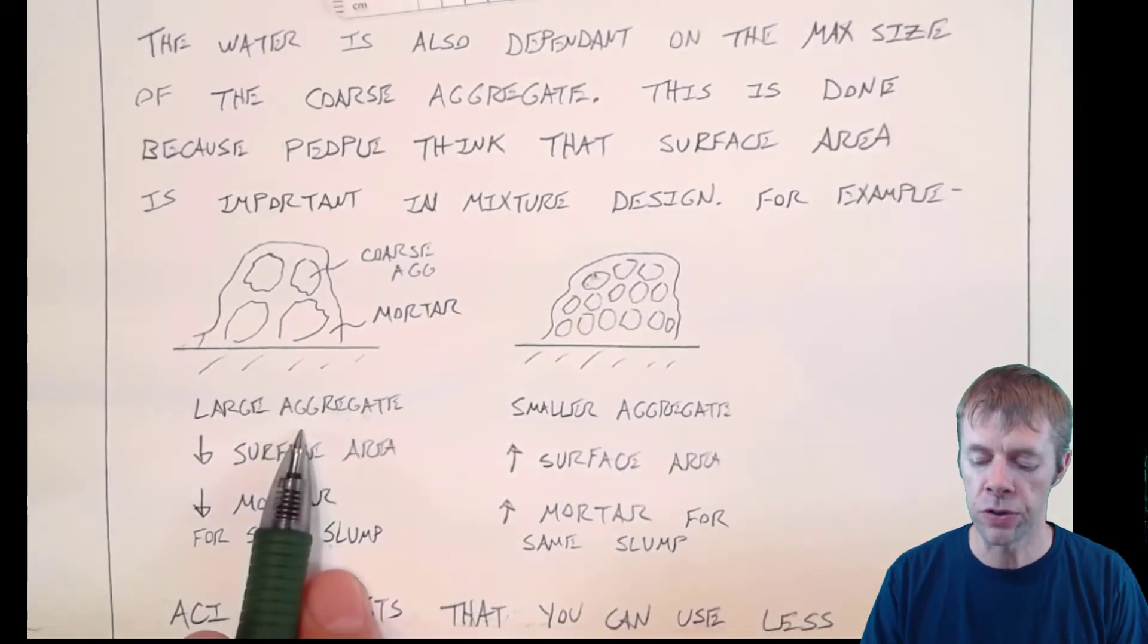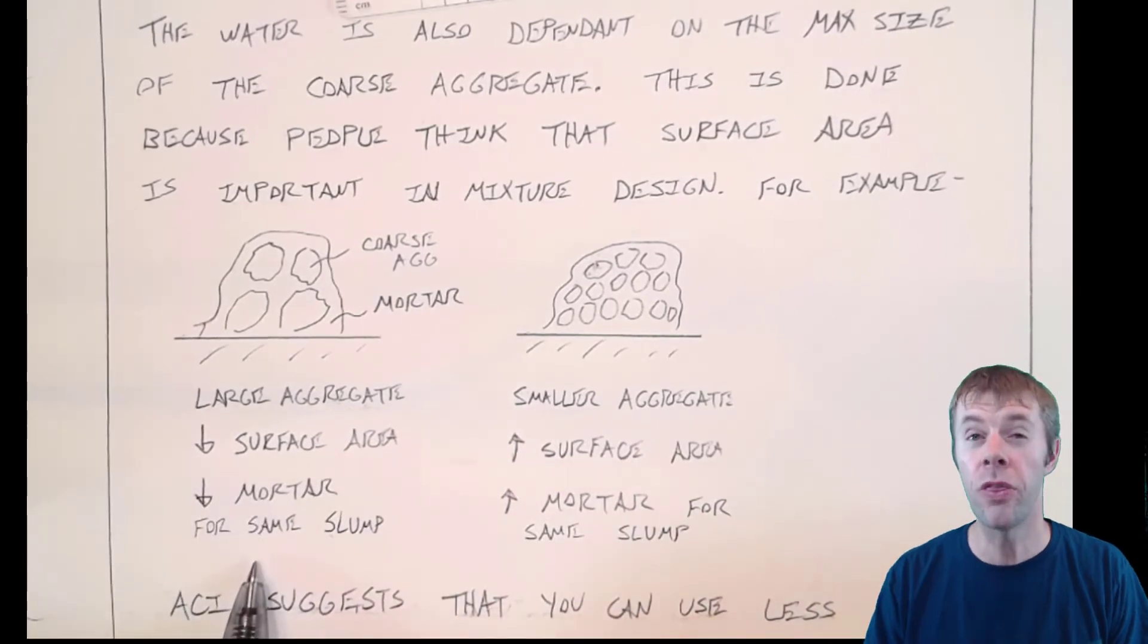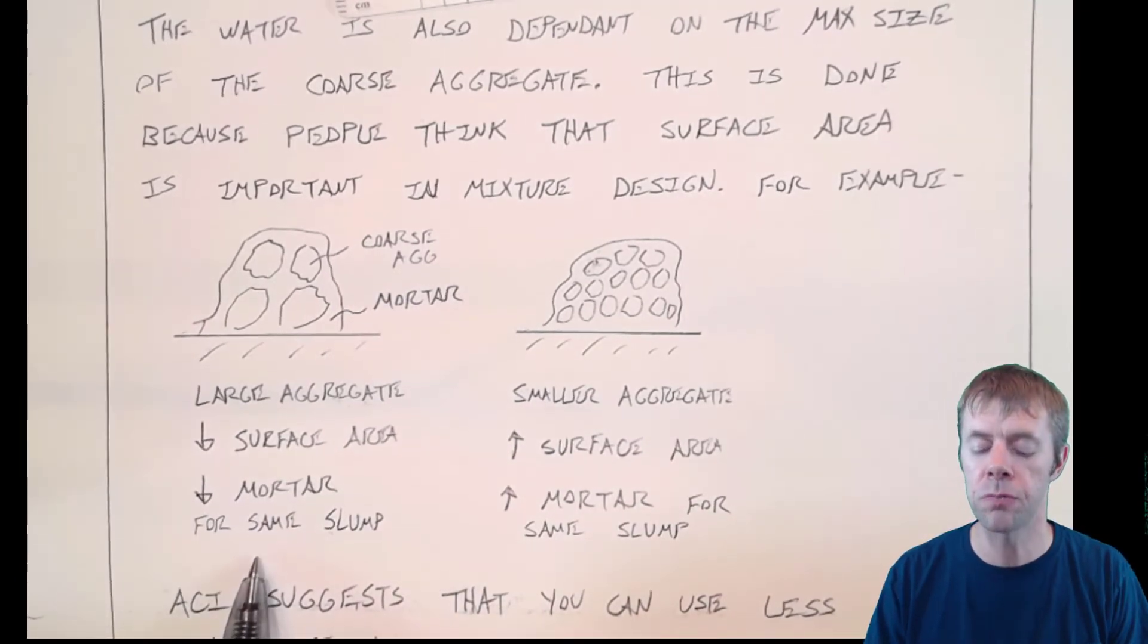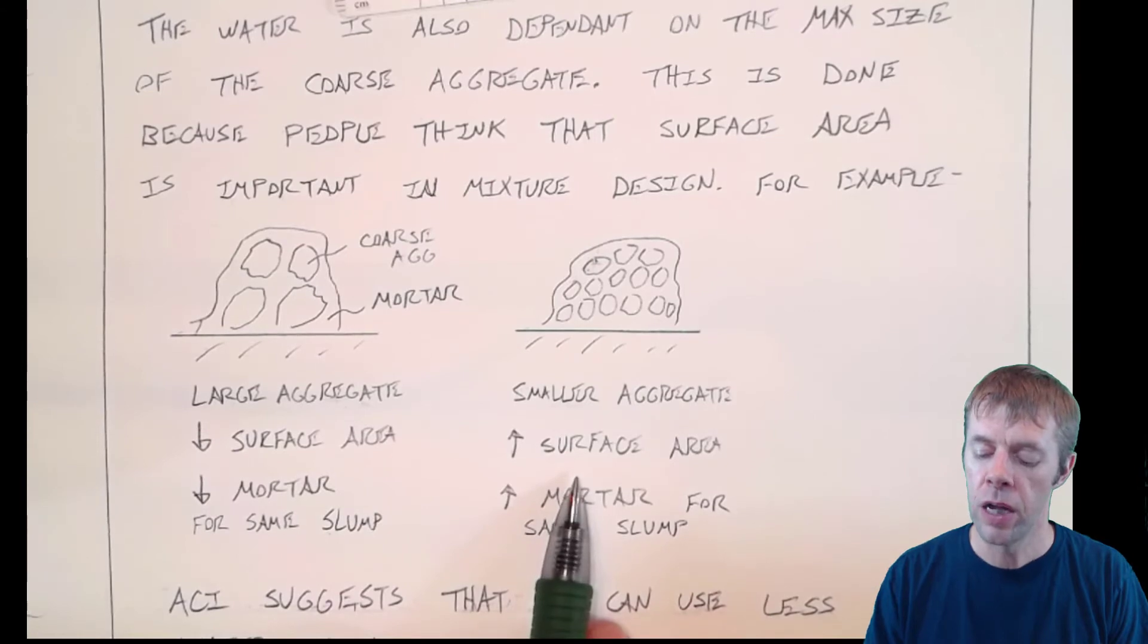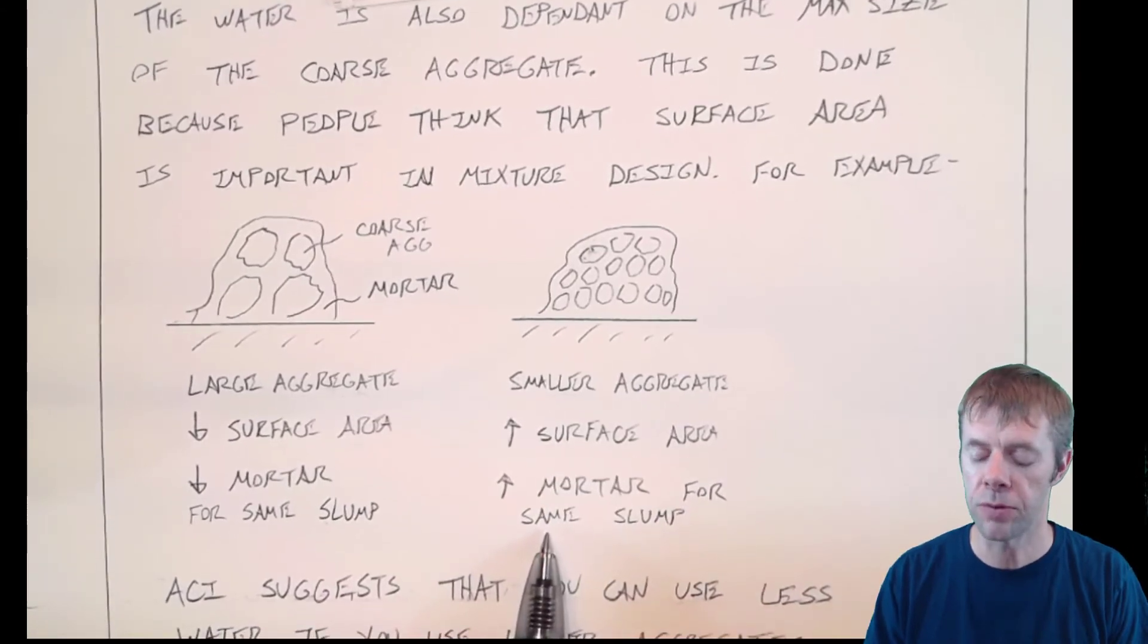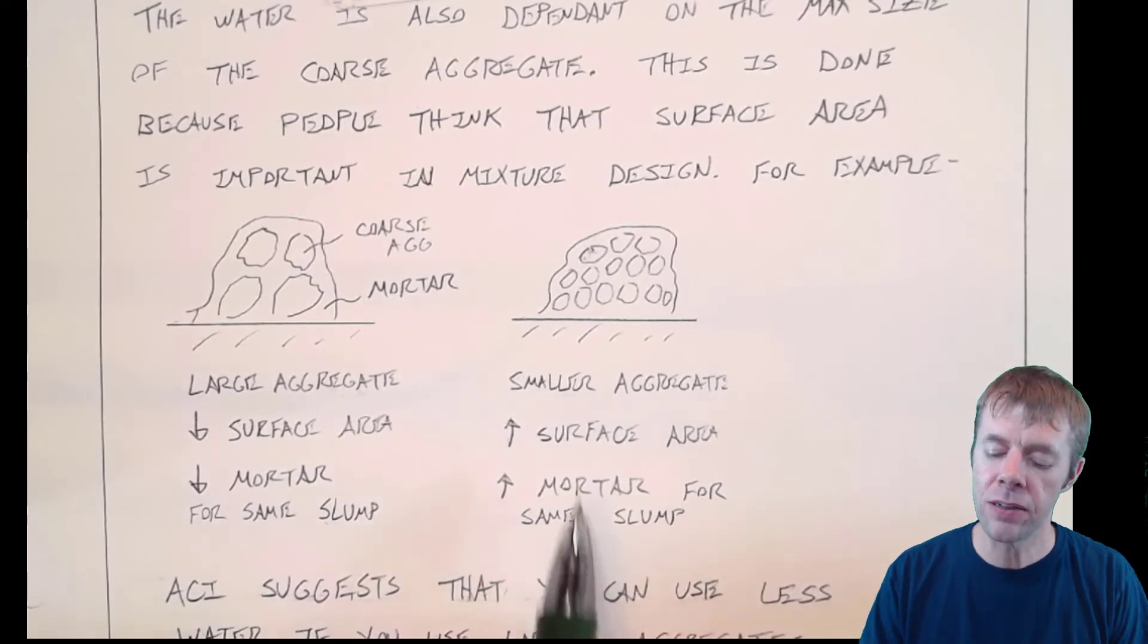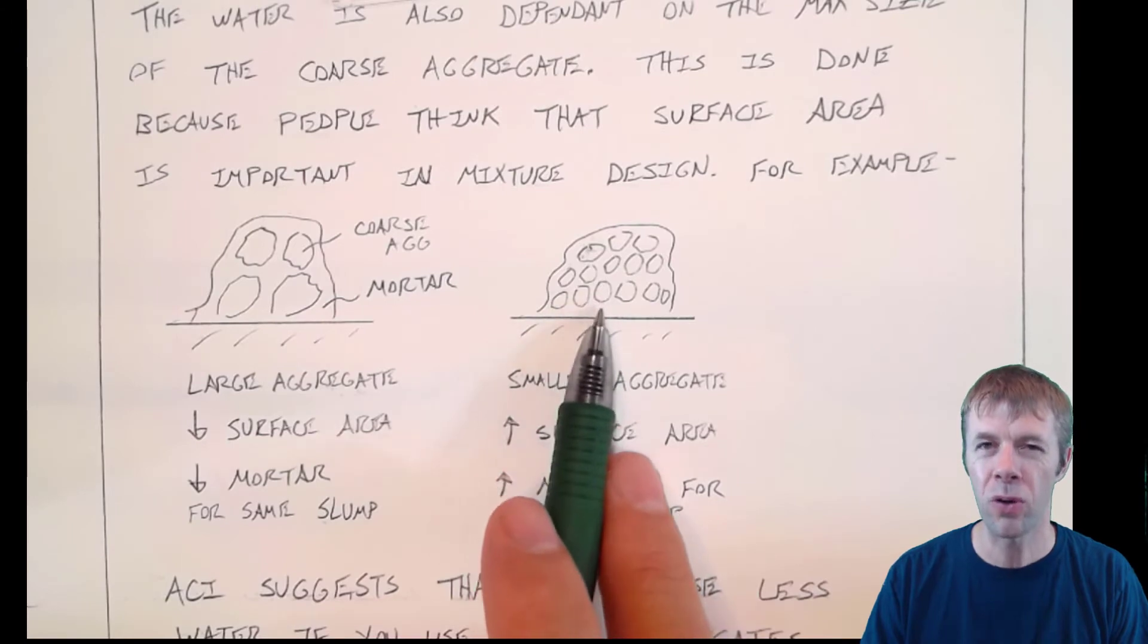if I have two concretes, one made up of a couple of more coarse aggregates and mortar and the other one made up of a bunch more coarse aggregates and mortar. This is larger aggregates, this is smaller. This one would have a lower surface area and people would think that you would need less mortar for the same slump.